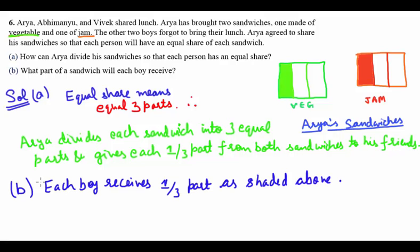Aria divides each sandwich into three equal parts and gives each person one over three part from both sandwiches. For part b: each boy receives one third of the veg part and similarly one third of the jam part. This was the answer.